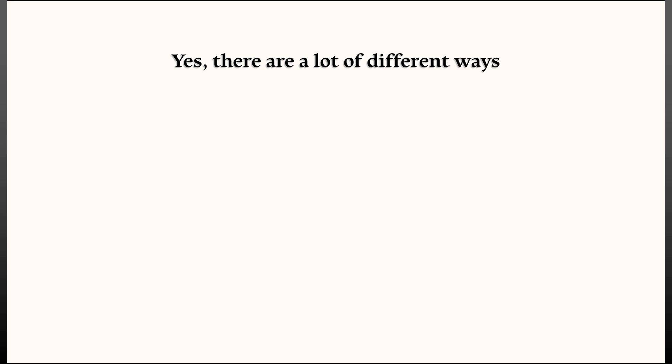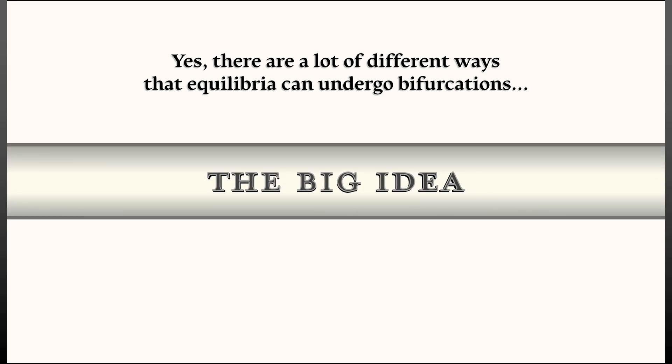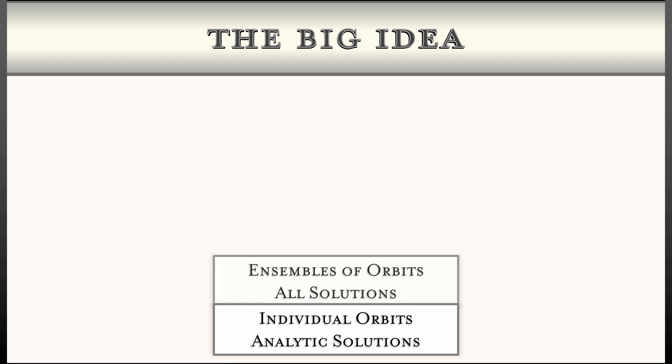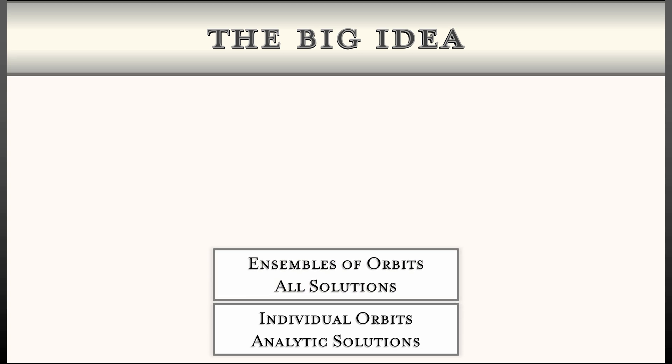Now, there's a lot left to say about how bifurcations actually work, and there's a lot of different ways that equilibria can undergo changes with the change in parameter. But the big idea is that bifurcations themselves, just like equilibria, can be classified. This is really a big idea.